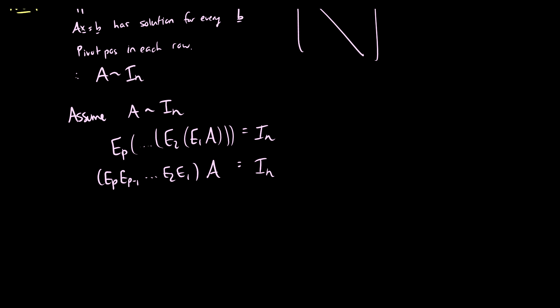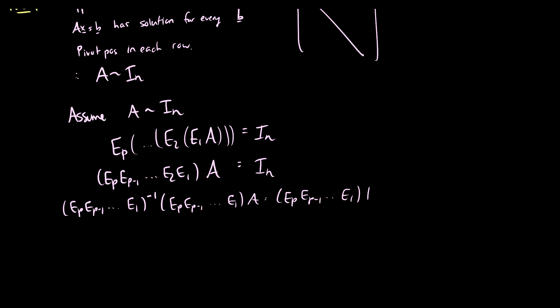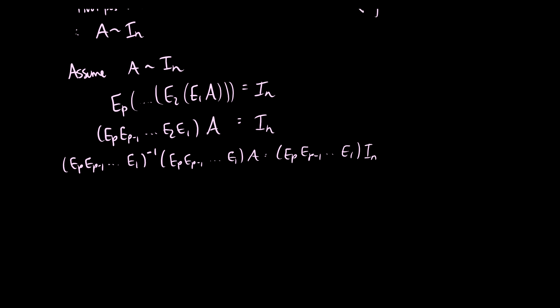This is the list of elementary row operations that takes A to the identity matrix. We can rewrite this: we can group all of our E's together — E_p through E_2 and E_1 — and this equals the identity matrix. Now, since all of our elementary matrices are invertible, we can multiply both sides by the inverses. Taking E_p inverse through E_1 inverse times the original product times A gives us E_p times E_p inverse all the way down to E_1 times the identity matrix. The left side becomes the identity, leaving us with A, and on the right side we're left with E_p, E_{p-1}, down to E_1 inverse.